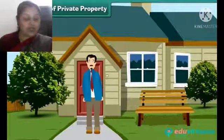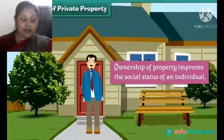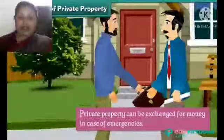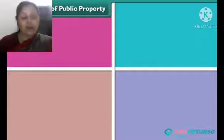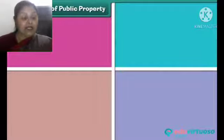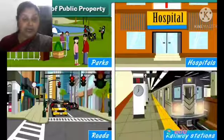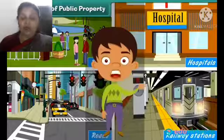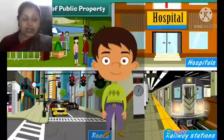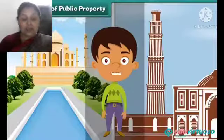Private property refers to places or buildings owned by individual persons or cooperatives. The owner of a private property has the right to use, occupy, or sell his or her property. The house or place we live in is our own property and is therefore called private property. Just as we protect our own things and property, we should also protect public property.